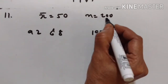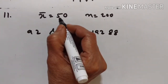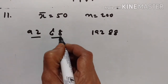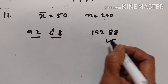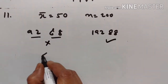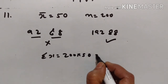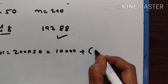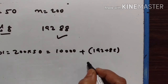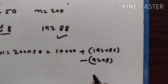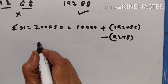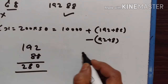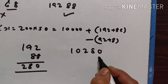11th problem: the mean of 200 items was 50. Later it was discovered that two items were misread as 92 and 8 instead of 192 and 88. The correct values are 192 and 88; the wrong ones are 92 and 8. Sum is equal to 200 times 50, that is 10,000. Add the correct ones and subtract the wrong ones.